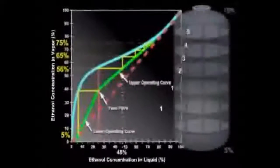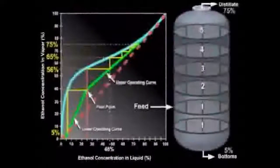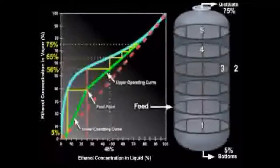The total number of stages for the entire column is just the sum of these two, or six.